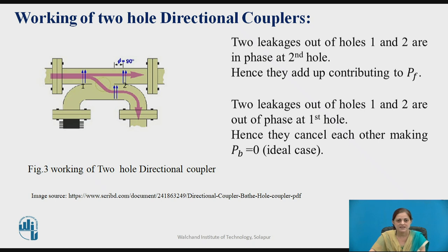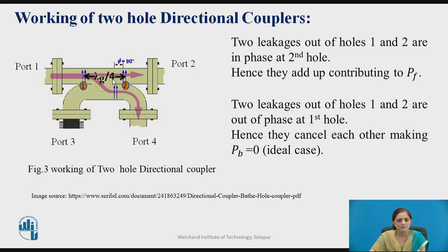Consider the directional coupler with four ports: port 1, 2, 3, and 4. Two holes are provided at hole number 1 and hole number 2, separated by a distance of λG/4, where λG is the guide wavelength. The two leakages out of the holes at port 1 and 2 are in phase at the second hole. That is, if the input is applied to port 1, the signals coming from hole 1 and hole 2 are in phase at hole 2. Hence they add up, contributing to the forward power at port 4.